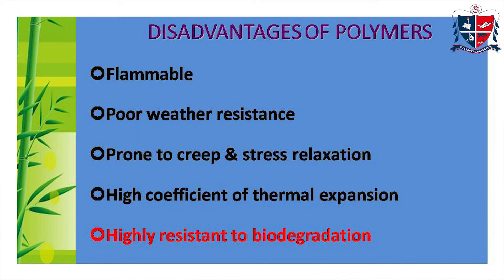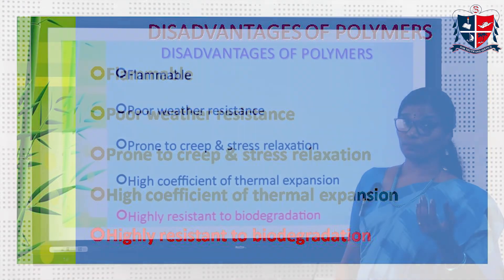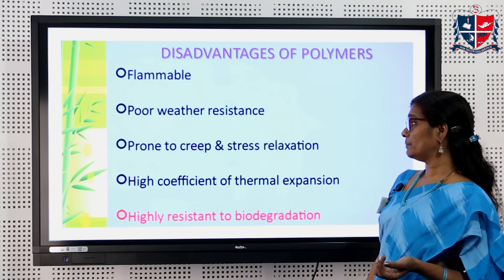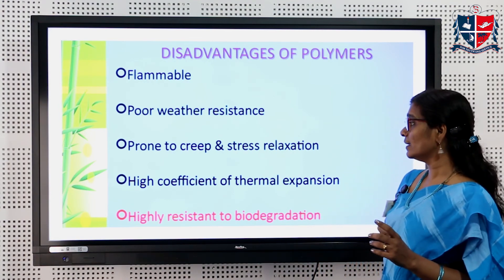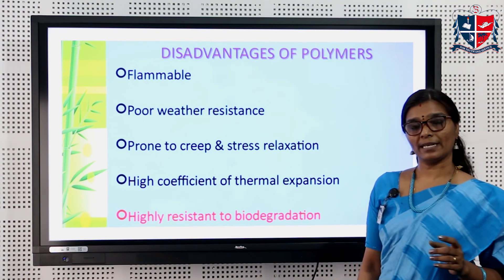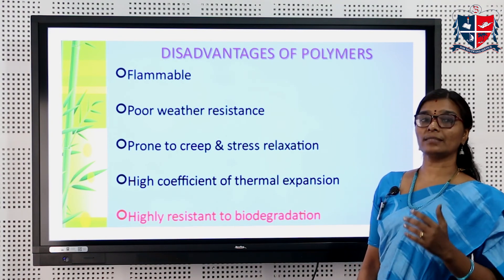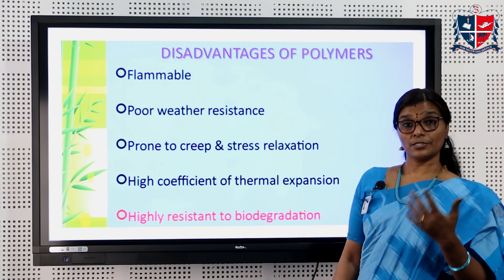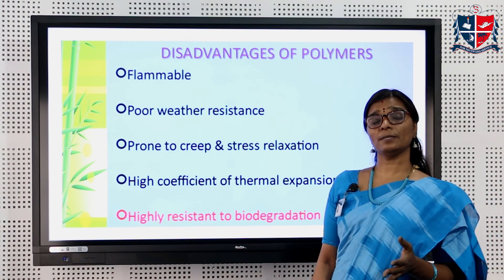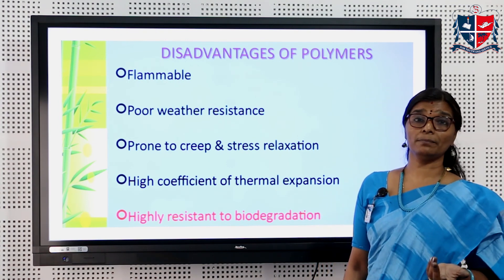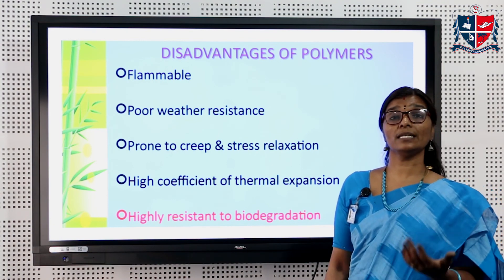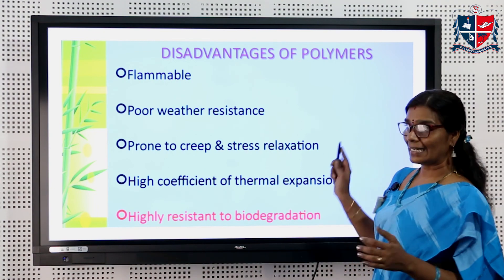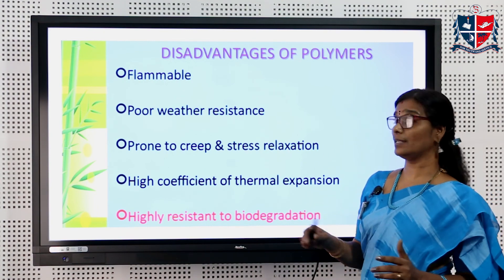There are some disadvantages of polymers and plastics. They are flammable, have poor weather resistance, are prone to creep and stress relaxation, and have a high coefficient of thermal expansion. Most importantly, plastics are non-biodegradable in nature — only two or three polymers are biodegradable, while the majority of plastics we use in day-to-day life are non-biodegradable.